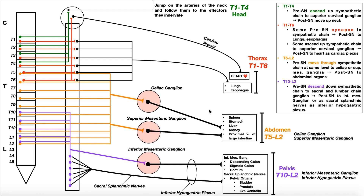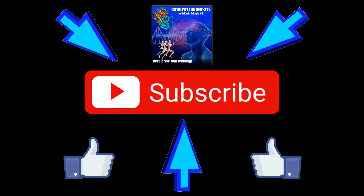Hopefully this video gave you a good overview of the sympathetic nervous system. There is one component that we did leave out — a fifth component where sympathetic innervation goes to the skin. That's covered in a separate video in this playlist, so make sure to check that out. Please make sure to like this video and subscribe to my channel for future videos and notifications. Thank you.